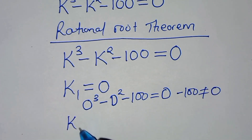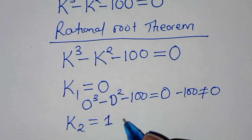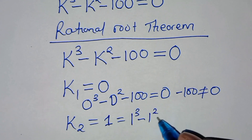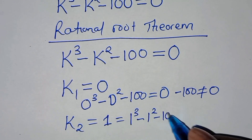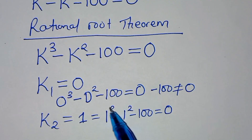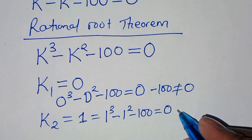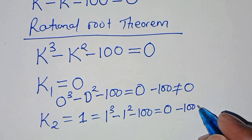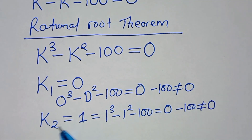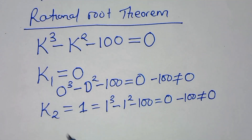Let's try k₂ equal to 1. We have 1³ minus 1² minus 100, which gives 1 minus 1 minus 100, equal to negative 100. This is not equal to 0, so k₁ and k₂ do not satisfy the equation.